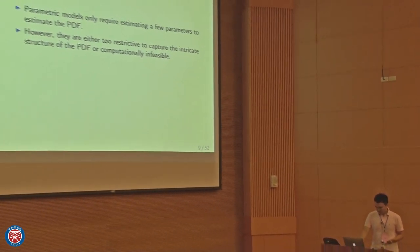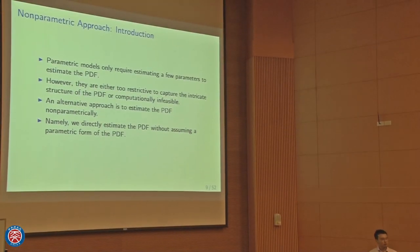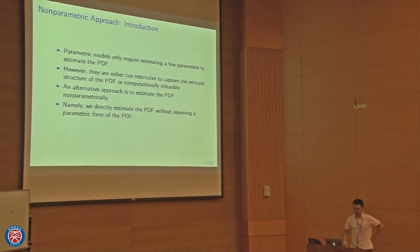When the distribution of the data is complicated, in many cases we would use the so-called non-parametric method. Non-parametric means we do not make any parametric assumption — we do not assume the density can be written in a parametric form. We directly use the original data to estimate the PDF.